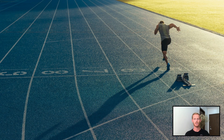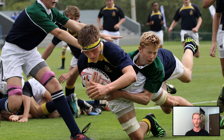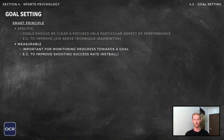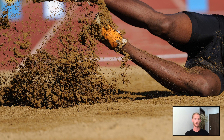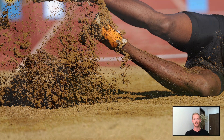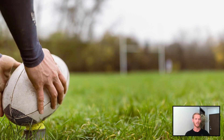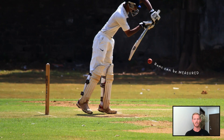Other specific goals might include to improve sprint start technique, to score a higher percentage of free throws in basketball, and to improve tackle success rate in rugby. The M stands for measurable, which is important for monitoring progress towards a goal. For example, 'I will improve my shooting success rate in netball' is measurable, as both the number of attempts and goals scored can easily be recorded. Other examples of measurable goals could include improving on a personal best time or distance in track and field athletics events, scoring a higher percentage of penalty kicks and conversions in rugby, and achieving a higher batting average in cricket.